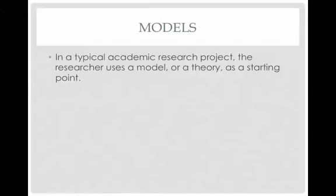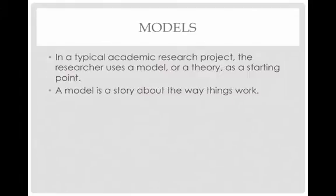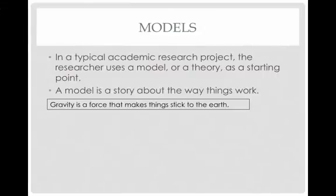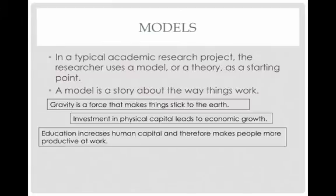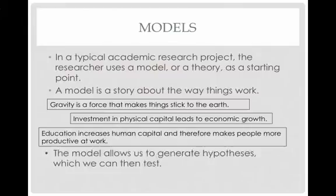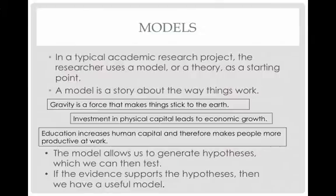In a typical academic research project, the researcher uses a model or a theory — it's the same thing. A model is a starting point, a story about the way things work. For example: gravity is a force that makes things stick to the earth — that's a model. Investment in physical capital leads to economic growth — that's an economic model. Education increases human capital and therefore makes people more productive at work — also an economics model. The model allows us to generate hypotheses which we can then test. If the evidence supports the hypotheses, then we have a useful model.